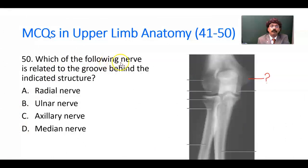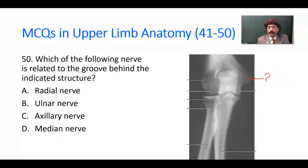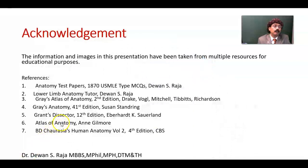Question number 50. Which of the following nerves is related to the groove behind the indicated structure? Options: radial nerve, ulnar nerve, axillary nerve, median nerve. This is the medial epicondyle — behind it we have the ulnar nerve. That is the answer. That covers questions number 41 to 50. Please feel free to ask questions, share the information with your friends, and subscribe to the channel. The answer key and Amazon links to two of my books are in the description. Have a nice day, bye.